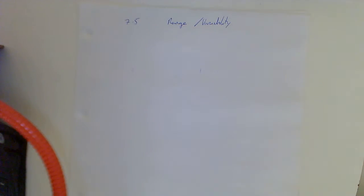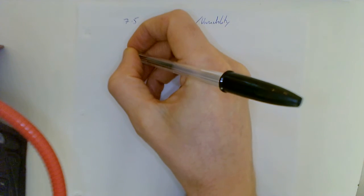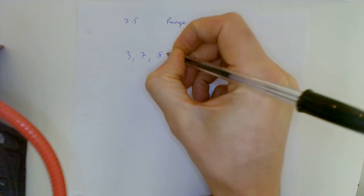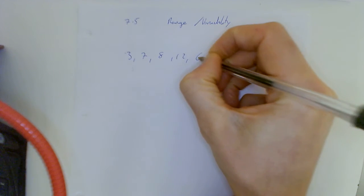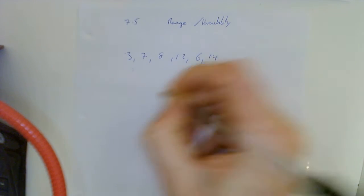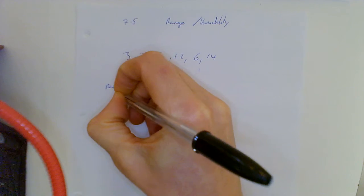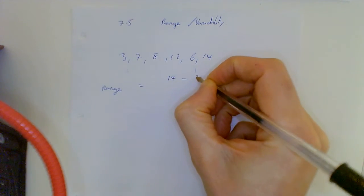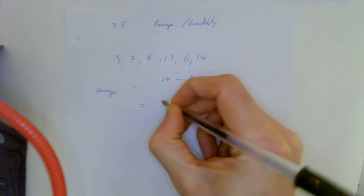Okay, nice easy one today. This is range. So I'll give you the following: 3, 7, 8, 12, 6, 14. Range is the top minus the bottom. The top is 14, the bottom is 3, so the range